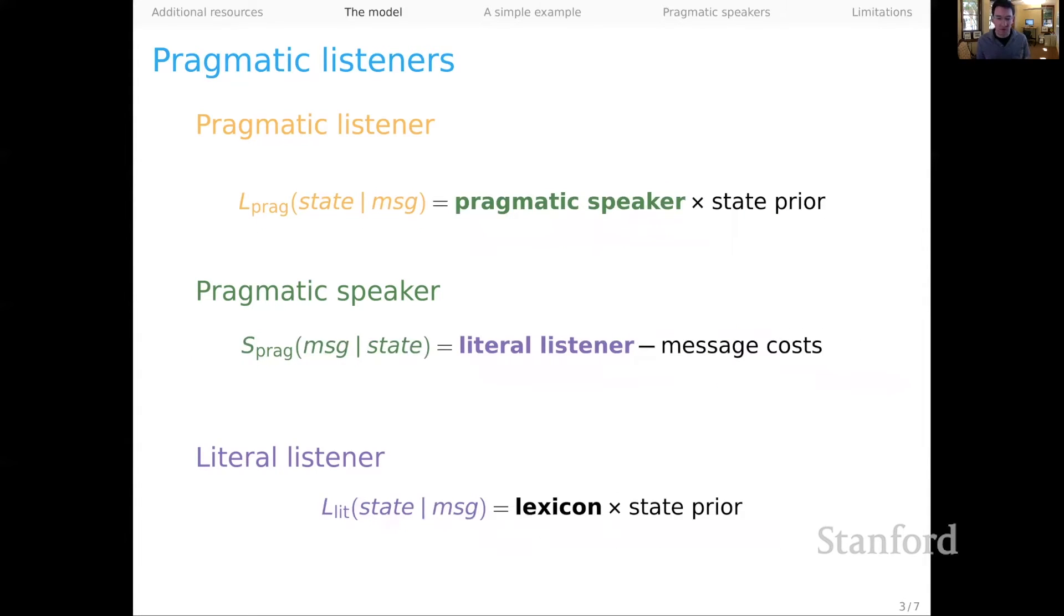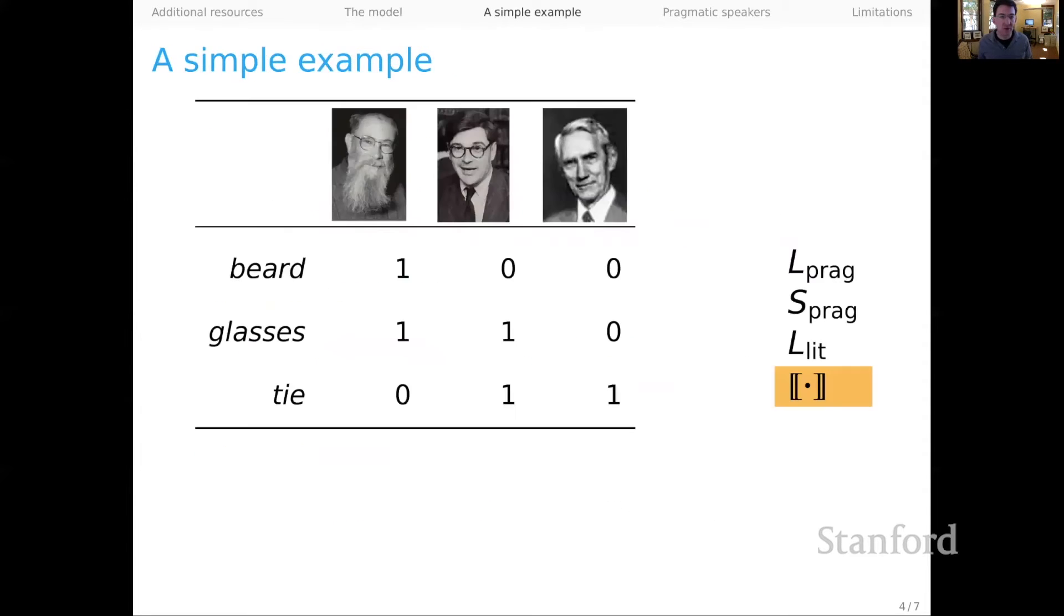Here's a kind of shorthand for the core model components of literal listeners reasoning about the lexicon and the prior over states. The pragmatic speaker reasons about the literal listener taking message costs into account. And finally, the pragmatic listener reasons about the pragmatic speaker taking the state prior into account. And then you can see nicely this point of indirection down to the semantic lexicon. And as I said, it's in that recursion that we get interesting pragmatic language use. Let me show you how that happens with a small example here.